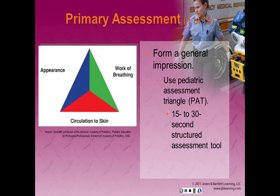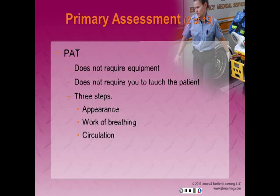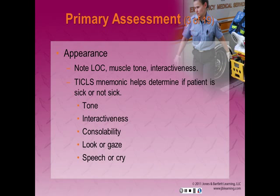When performing the primary assessment, the first step is to form a general impression. Specific to the pediatric population, we use the Pediatric Assessment Triangle (PAT) to evaluate this general impression. The PAT is a 15 to 30 second structured assessment tool that allows you to rapidly form a general impression without touching your patient. It consists of three elements requiring no equipment: appearance — which includes muscle tone and mental status — work of breathing, and circulation to skin.